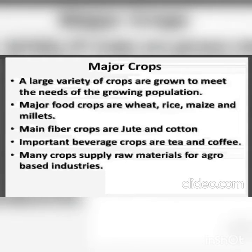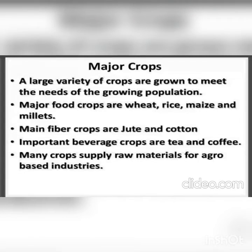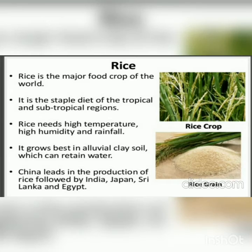A large variety of crops are grown to meet the needs of the growing population. Major food crops are wheat, rice, maize, and millet. Fiber crops are jute and cotton. Important beverage crops are tea and coffee. Many crops also supply raw material for agro-based industries.